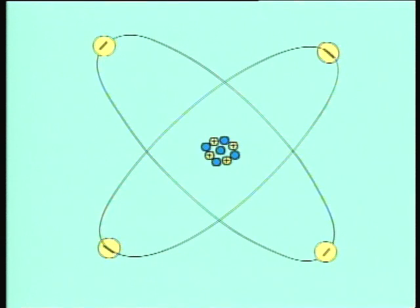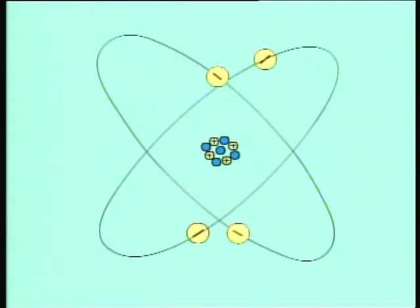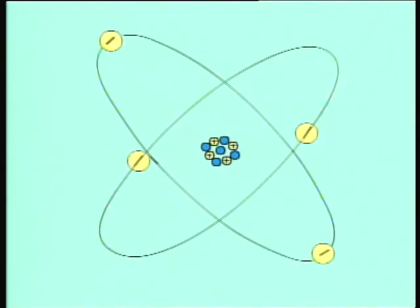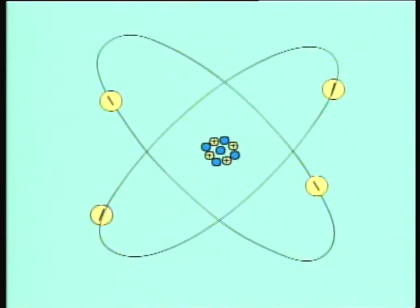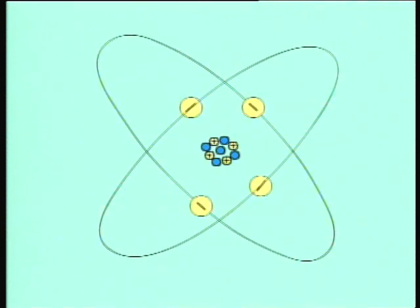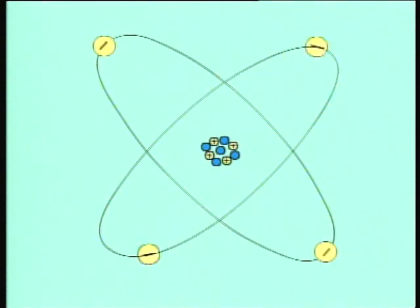The electrons carry a negative charge and they may be pictured as moving around the nucleus. The size of the charge on an electron and on a proton is the same, and the number of electrons and protons are also the same. This means that the positive charge of the proton is balanced by the negative charge of the electrons. Therefore, the atom is neutral or uncharged.